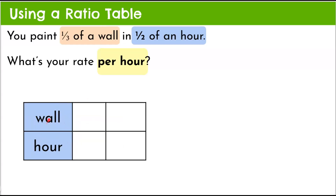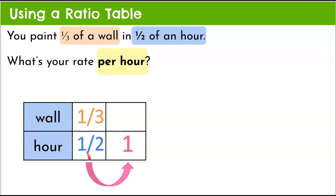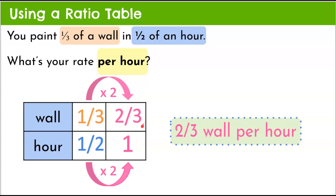Now let's model using a ratio table. We have wall and hour. Our given rate is one-third of a wall in one-half of an hour, and we want the hour quantity to be one. To get from one-half to one, we multiply by two — one-half times two is one. We do the same to the wall quantity: one-third multiplied by two is two-thirds, giving a unit rate of two-thirds of a wall per hour.